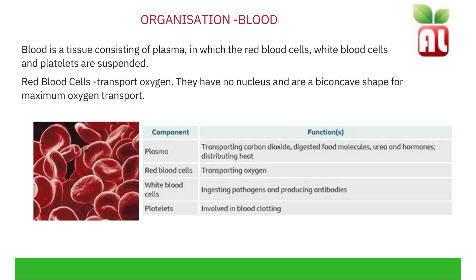Blood can be classified as a tissue — a group of similar cells working together to perform a function. The blood consists of plasma in which the red blood cells, white blood cells and platelets are suspended. The function of the red blood cells is to transport oxygen. They are specialised — adapted to have no nucleus and are biconcave in shape for maximum oxygen transport.